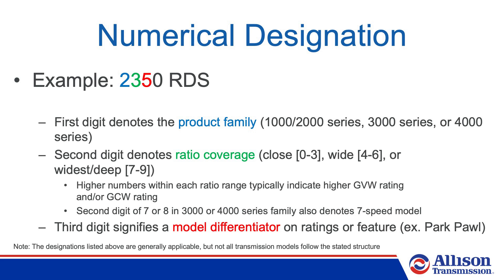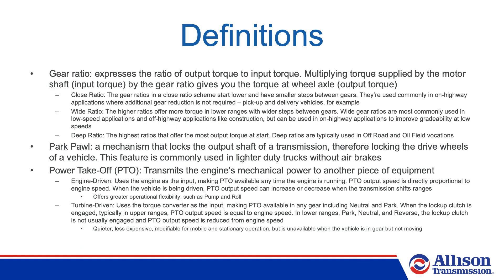Please contact your local Allison representative with any questions. Before we continue, let's define some of the terms used to discuss various features of an Allison transmission. A gear ratio expresses the ratio of output torque to input torque. Multiplying torque supplied by the motor shaft (input torque) by the gear ratio gives you torque at the wheel axle (output torque). In a close ratio, the gear ratios start lower and have smaller steps between gears. They're used commonly in on-highway applications where additional gear reduction is not required, for example in pickup and delivery vehicles.